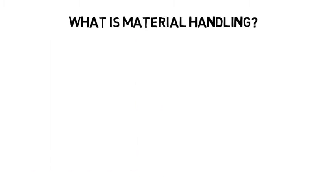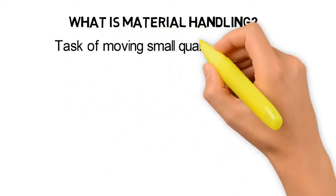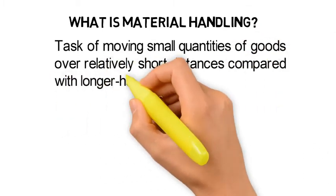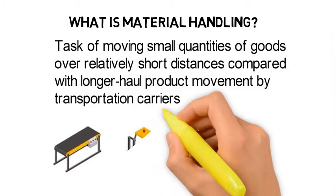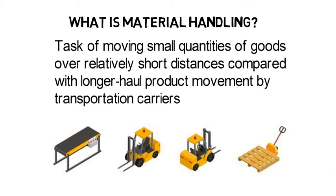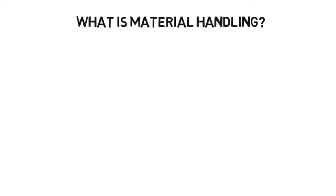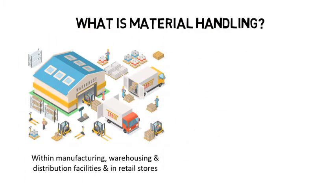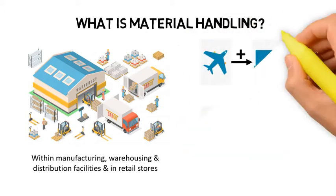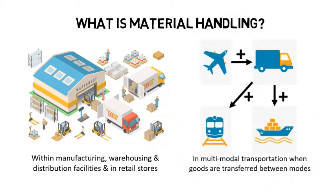Material handling is simply defined as the task of moving small quantities of goods over relatively short distances, compared with longer-haul route movement by transportation carriers. This is achieved by using various types of equipment. Material handling can take place within a manufacturing site, a warehouse or a distribution centre, and in retail stores. It also takes place during multi-modal transportation when goods are transferred between modes.